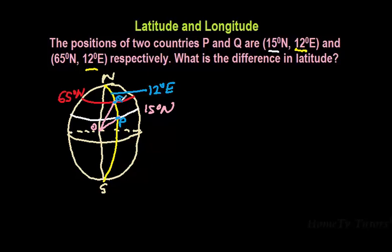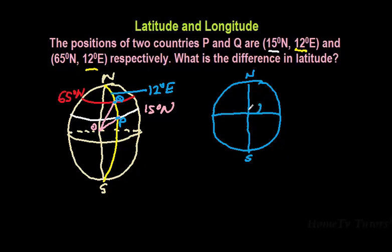So this is, let's draw the cross section of the north on the south. Then moving from the equator, this is the equator, P moves 15 degrees to the north. That is P. Then Q, 65 degrees to the north. Q.